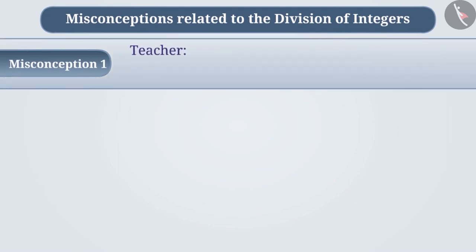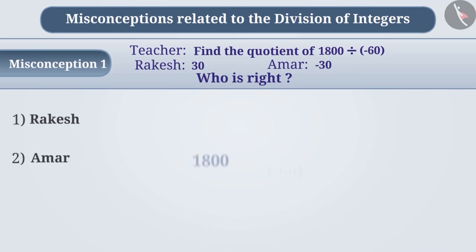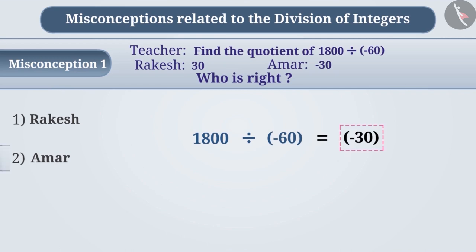Misconception 1. The teacher asked the children to find the quotient of 1800 divided by minus 60. Rakesh solved it first and his answer was 30. After some time, Amar replied minus 30. The quotient of integers with two different signs is negative. Therefore, the quotient of 1800 divided by minus 60 is minus 30. That is, Amar has given the right answer.